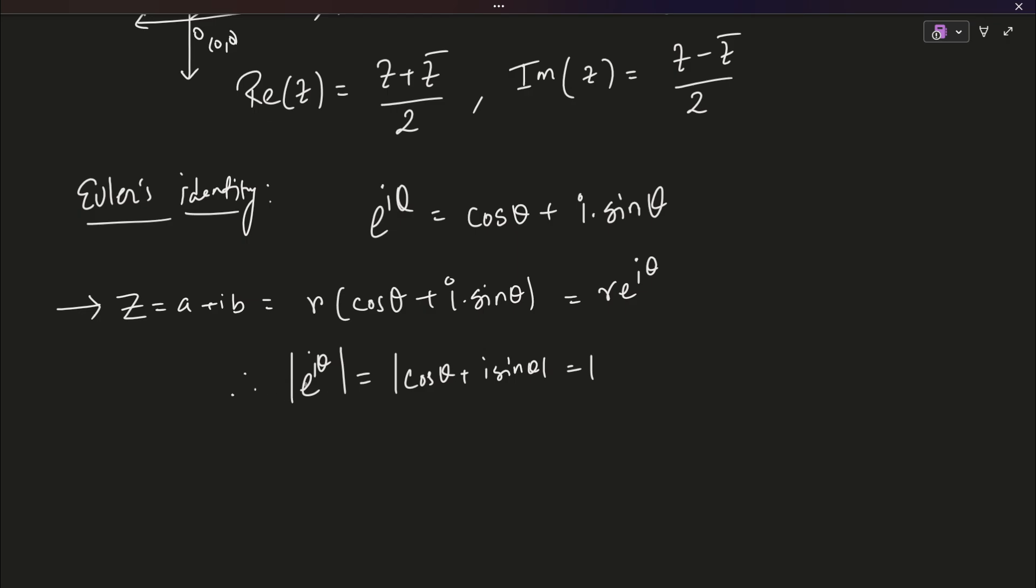This is an important point because whenever you have problems, you see that you have problems where you have mod z equals to 1. An important point should be whenever you have mod z equals to 1, put z equals to e to the power i theta. And this would relatively simplify the problems.